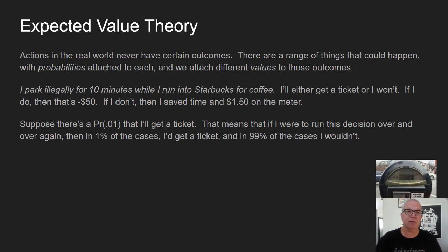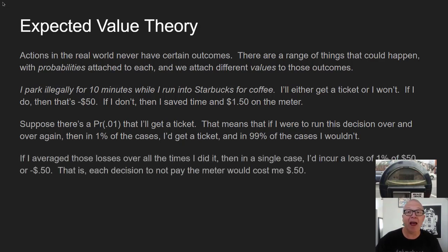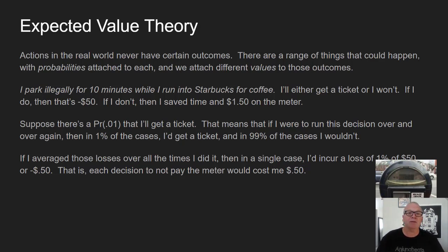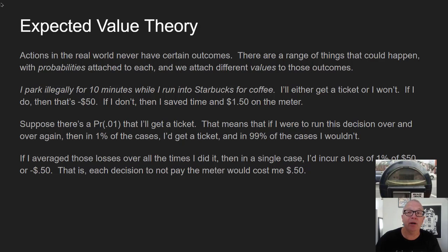If I average those losses over all the times I did this — suppose I park illegally hundreds or thousands of times over the years — in a single case I'd incur a loss of 1% of $50, or 50 cents. That is, each decision to not pay the meter would cost me 50 cents. Where does that 50 cents come from? We said you only get a ticket 1% of the time. If a ticket costs $50, and suppose I did it a hundred times and got ticketed exactly once — that's a $50 ticket for a hundred instances, so I paid 50 cents apiece. Running the weighted average, each single choice costs 50 cents.